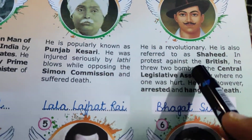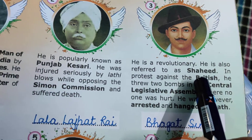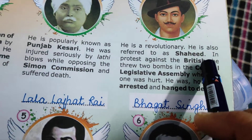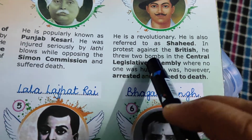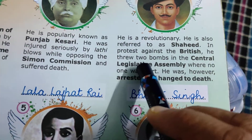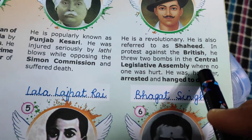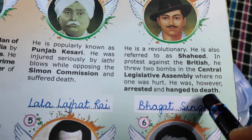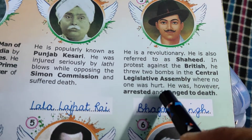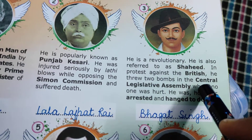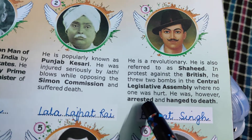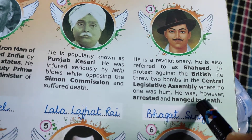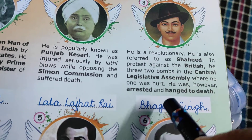Coming on to the next one. He is a revolutionary freedom fighter, also referred to as Shaheed. In protest against the British, he threw two bombs in the Central Legislative Assembly where no one was hurt. He was, however, arrested and hanged to death. At a very young age he stepped into saving his country from the Britishers. He was sentenced to death along with two other persons, Sukhdev and Rajguru. The name of this freedom fighter is Bhagat Singh.